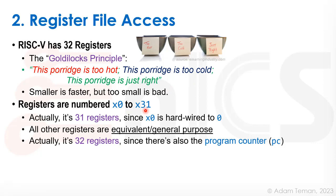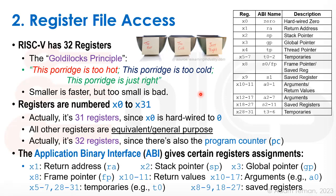These registers are numbered x0 to x31, though we effectively only have 31 because x0 is hardwired to zero. Zero is used so often in machine code that instead of loading zero into a register and then operating on it, x0 is just wires connected to ground — no flip-flops needed. All other registers are equivalent and general purpose. There is also the program counter, which is another register but not general purpose.